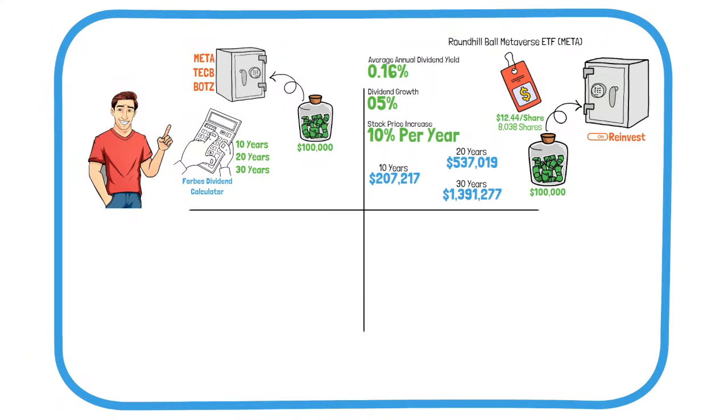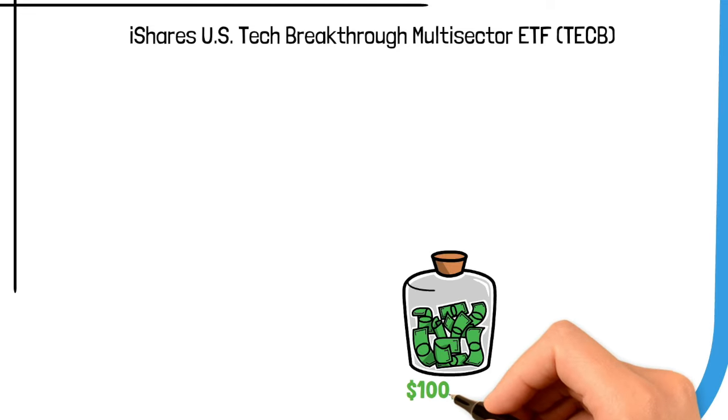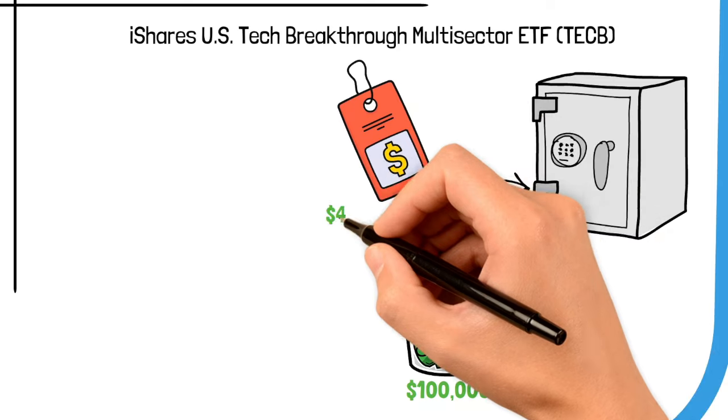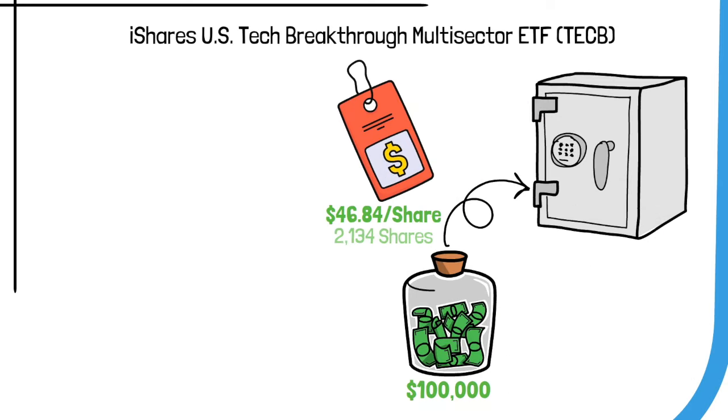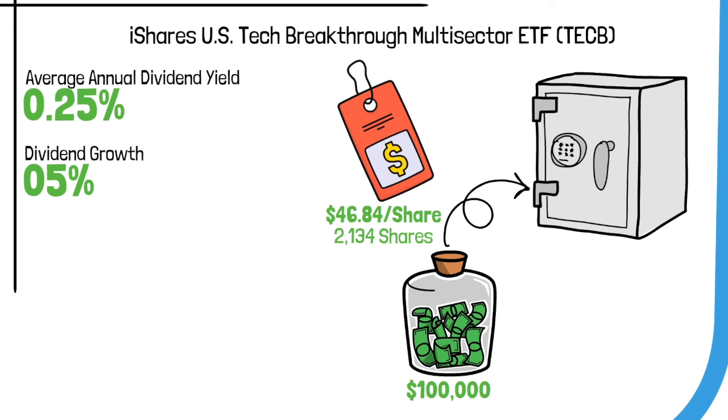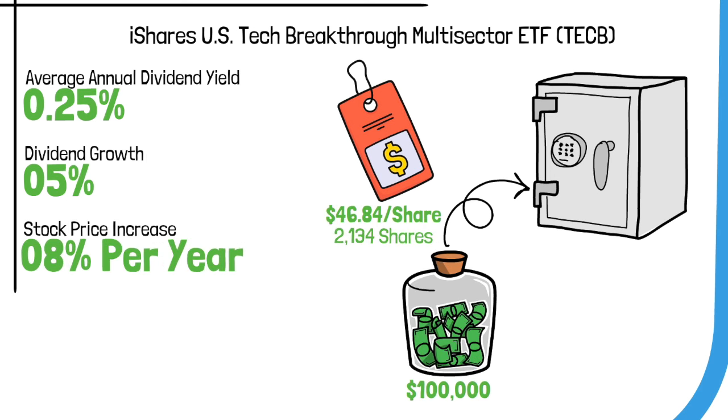Next, let's look at the iShares US Tech Breakthrough Multi-Sector ETF. Investing $100,000 with a stock price of $46.84 would get you around 2,134 shares. With a historical average annual dividend yield of 0.25%, dividends increasing by 5% annually, and the stock price growing by 8% each year, and reinvesting your dividends, the investment potential is strong.